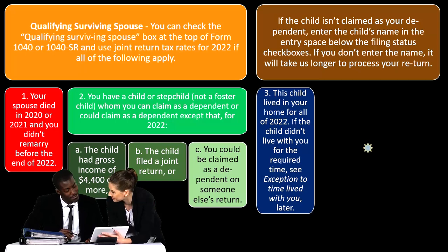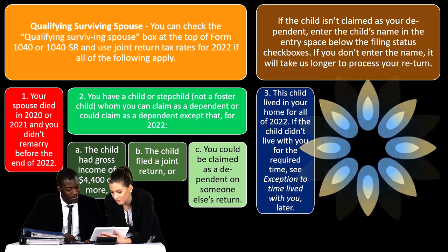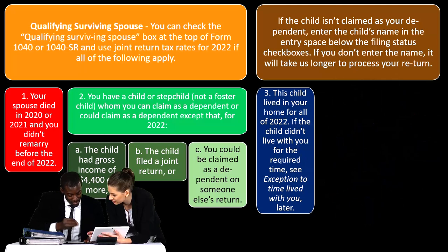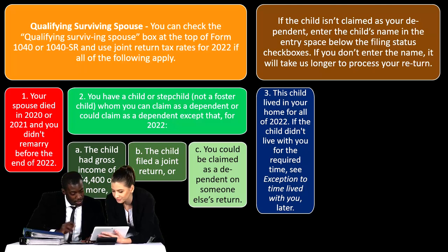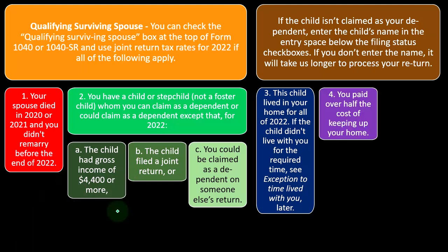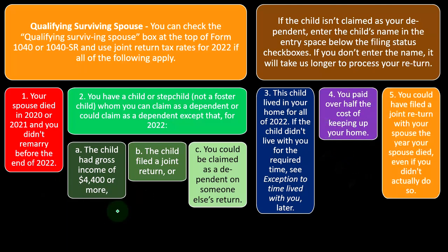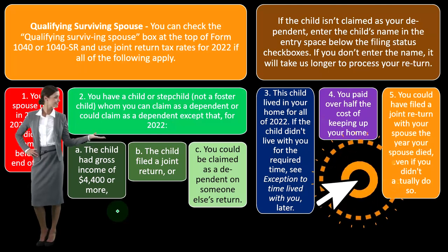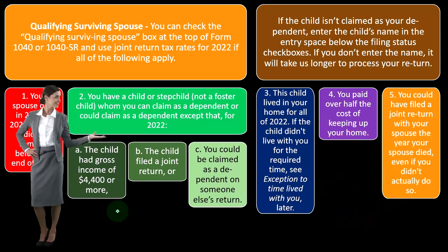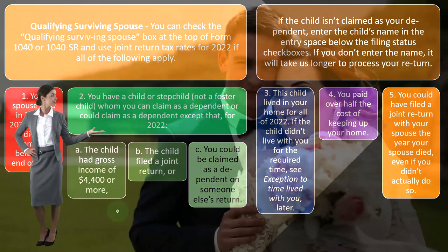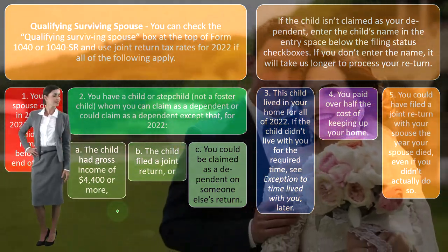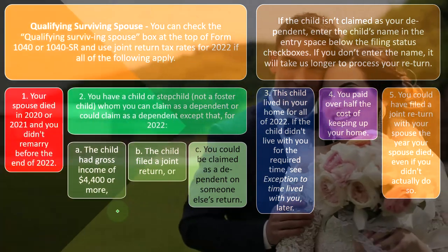Requirement three: this child lived in your home for all of 2022. If the child didn't live with you for the required time, see the exception to time lived with you. Requirement four: you paid over half the cost of keeping up your home. Requirement five: you could have filed a joint return with your spouse the year your spouse died, even if you didn't actually do so — meaning at the year of death you probably filed, or could have filed, a married filing jointly return.